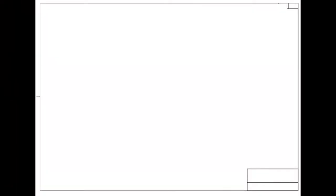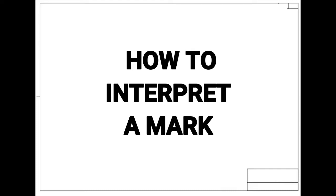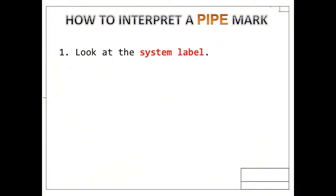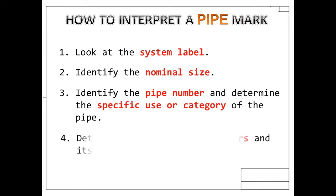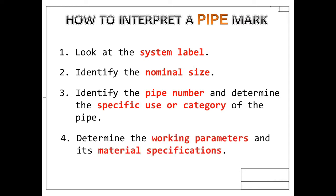Before we start, let us first see the steps to take on how to interpret a mark. For pipe marks: first, take a look at the system label. Next, identify the nominal size, then identify the pipe number, and look at the specific use or category of the pipe. Once the specific category has been identified, you can now determine the working parameters of the pipe and even its material specifications.